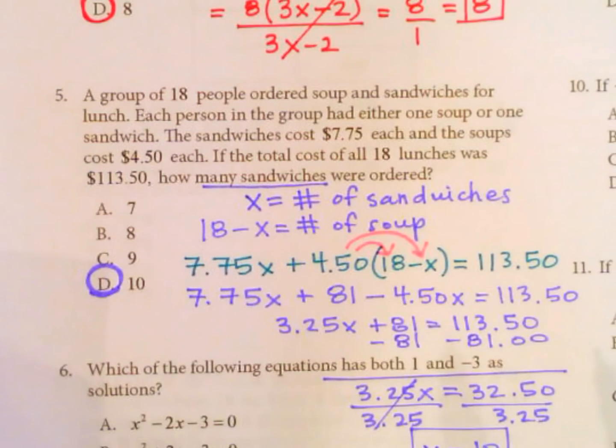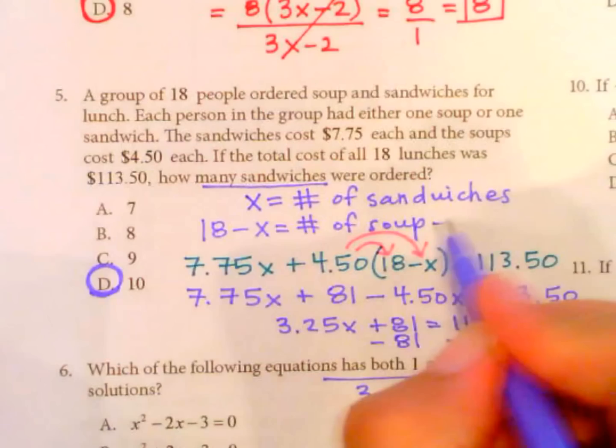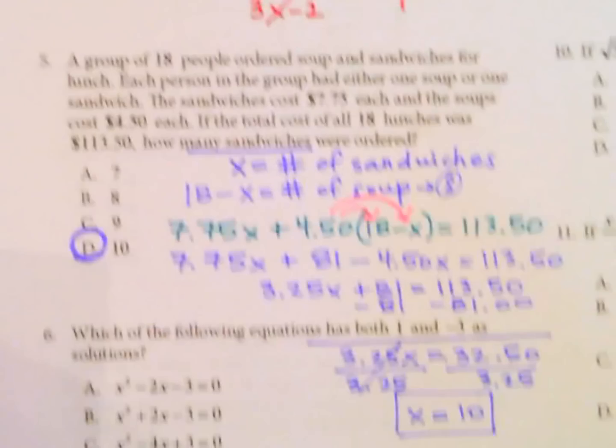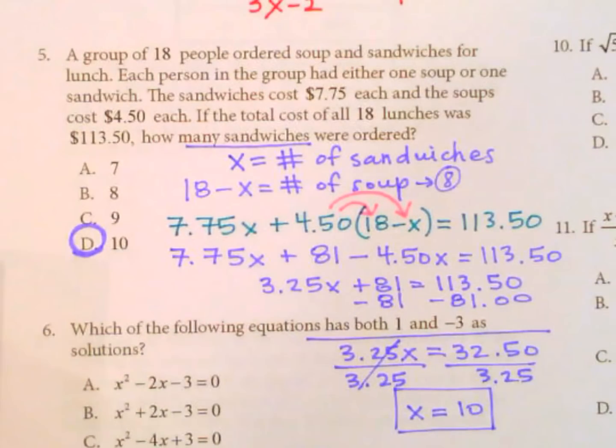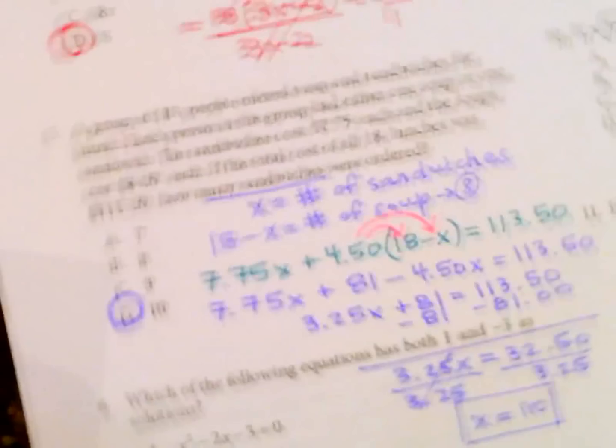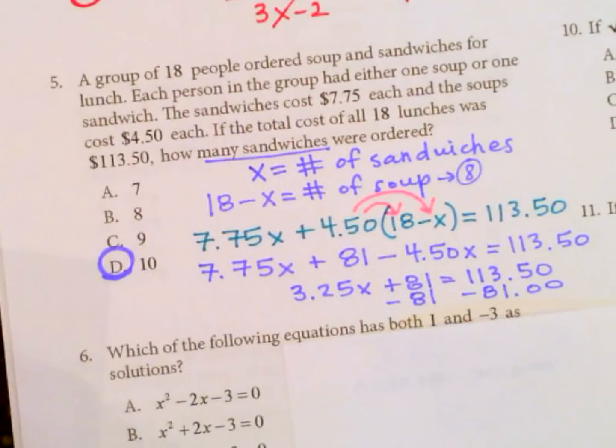If the question was asking how many soups, we'd say 18 minus 10 tells us how many soups. So there would have been eight soups. Just as a side note for more understanding there. So x equals 10. Okay, number six. I'm going to put this paper here. Actually, we'll stop there.